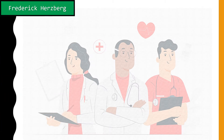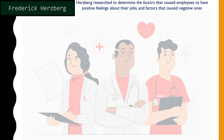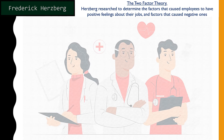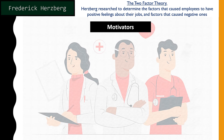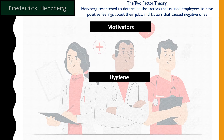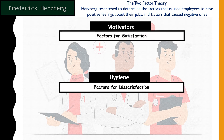Frederick Herzberg developed the two-factor theory. He researched factors that caused employees to have positive feelings about their jobs and those that caused dissatisfaction or negative feelings. These two factors are called the motivators — factors that cause happiness when present — and the hygiene factors — factors that cause dissatisfaction with their jobs.